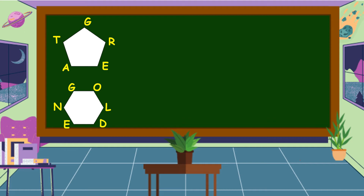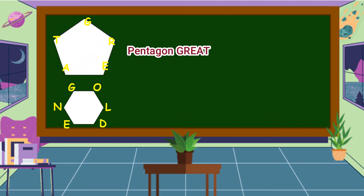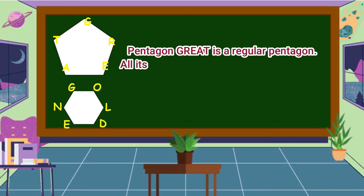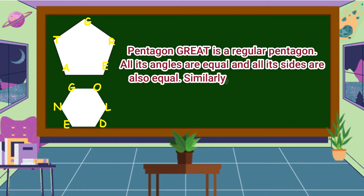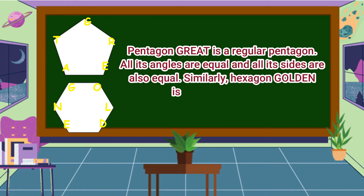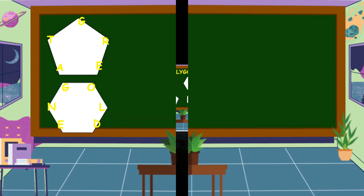Therefore, pentagon GREAT is a regular pentagon — all its angles are equal and all its sides are also equal. Similarly, hexagon GOLDEN is a regular hexagon.